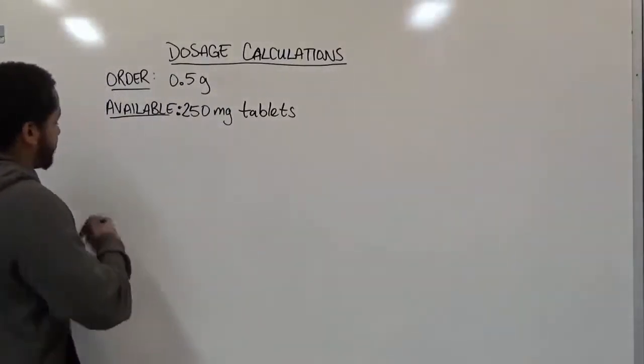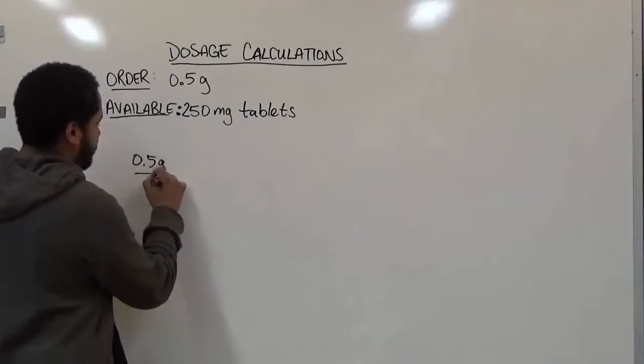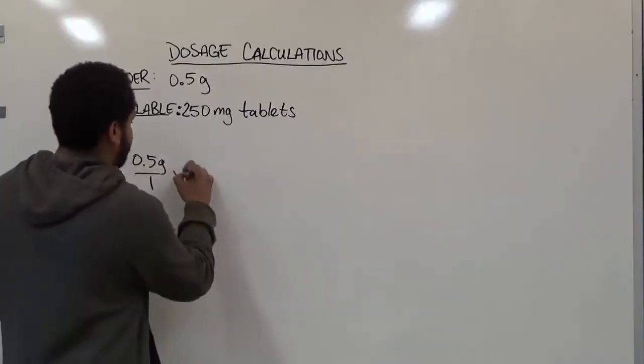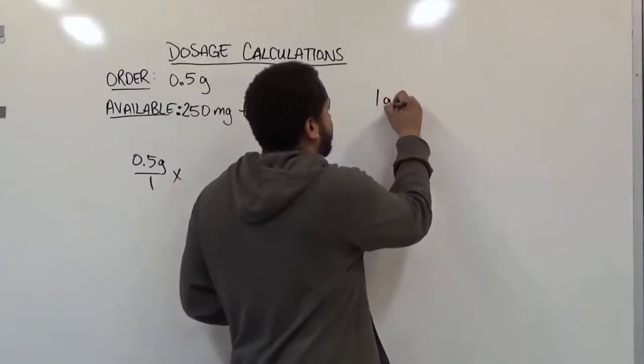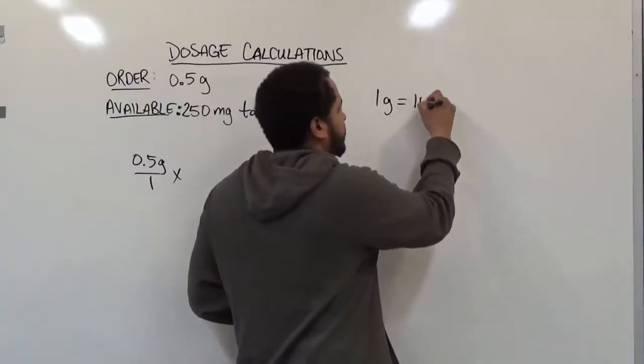Here we have 0.5 grams over 1. To convert grams to milligrams, let's establish a conversion value. 1 gram is equivalent to 1,000 milligrams.